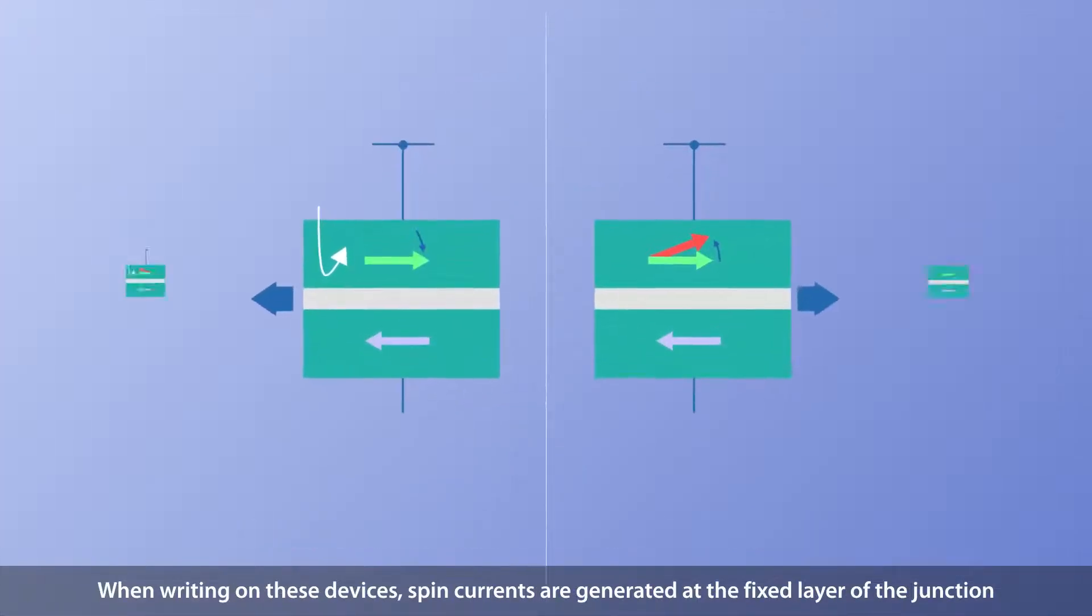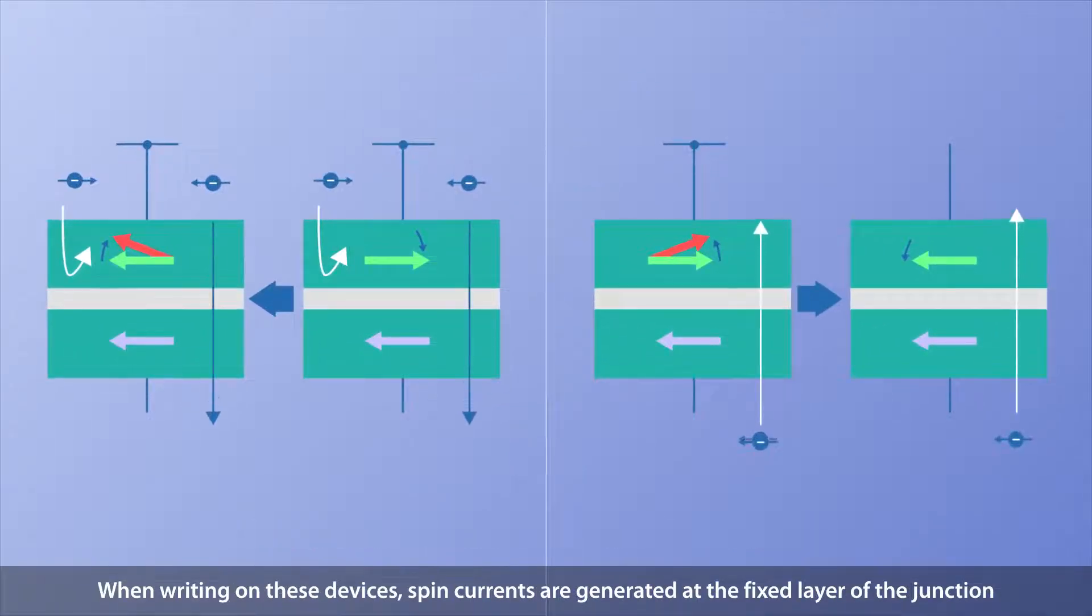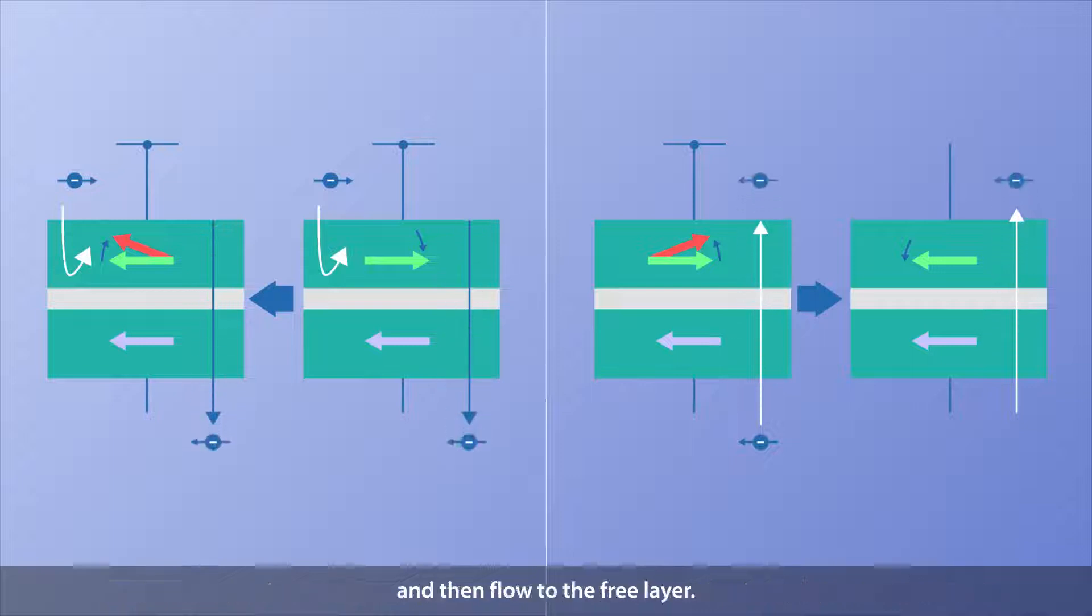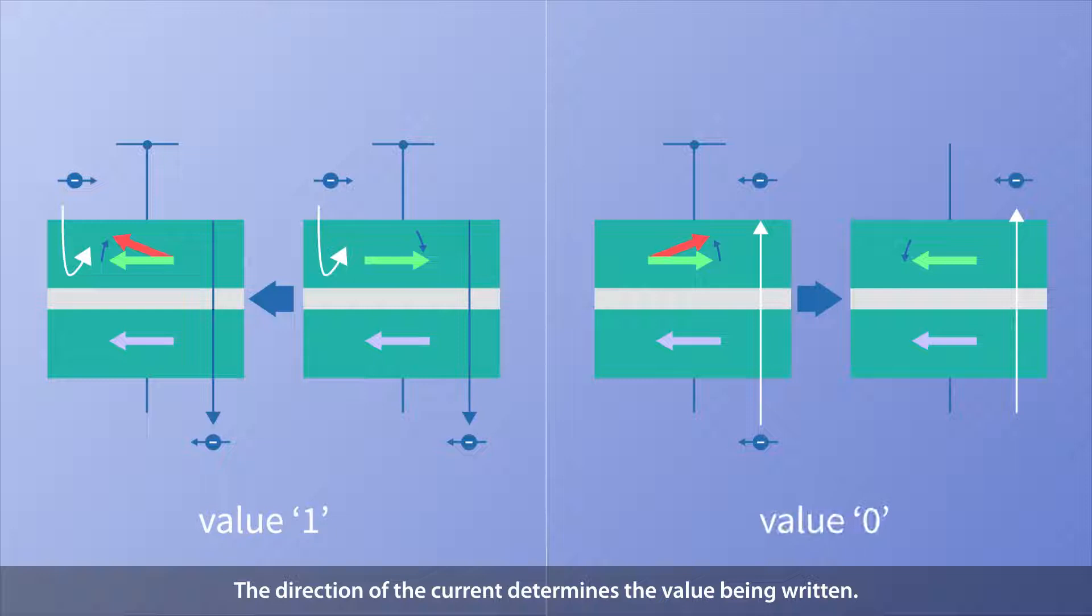When writing on these devices, spin currents are generated at the fixed layer of the junction and then flow to the free layer. The direction of the current determines the value being written.